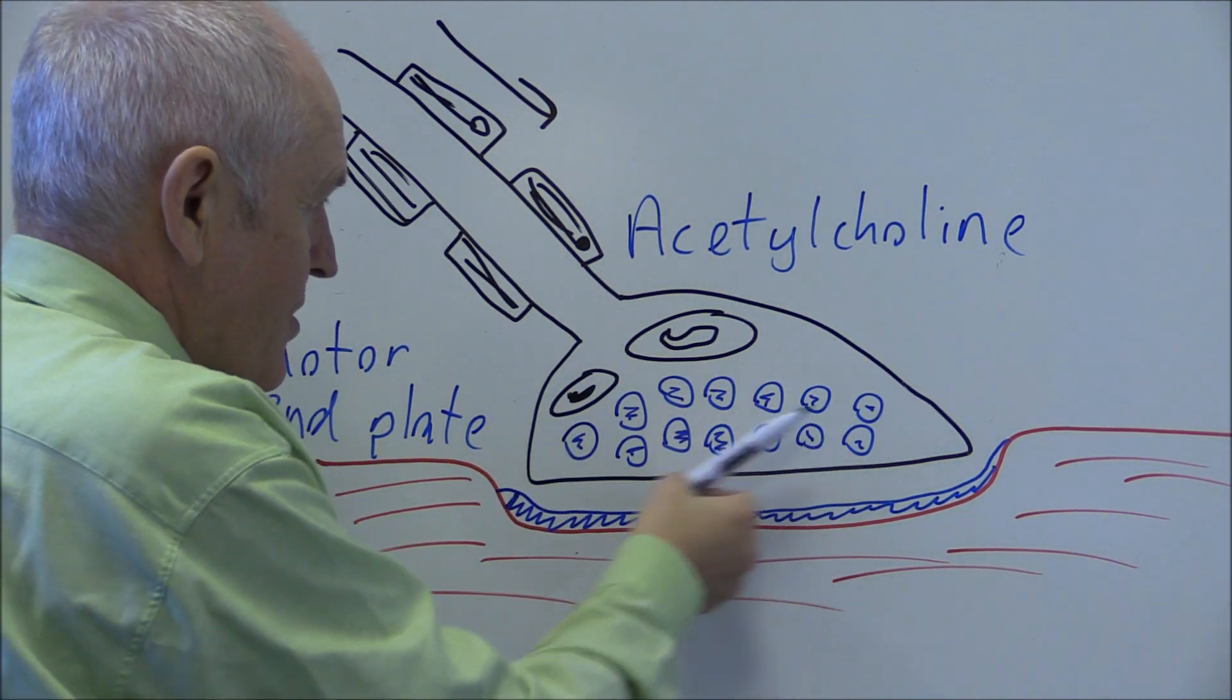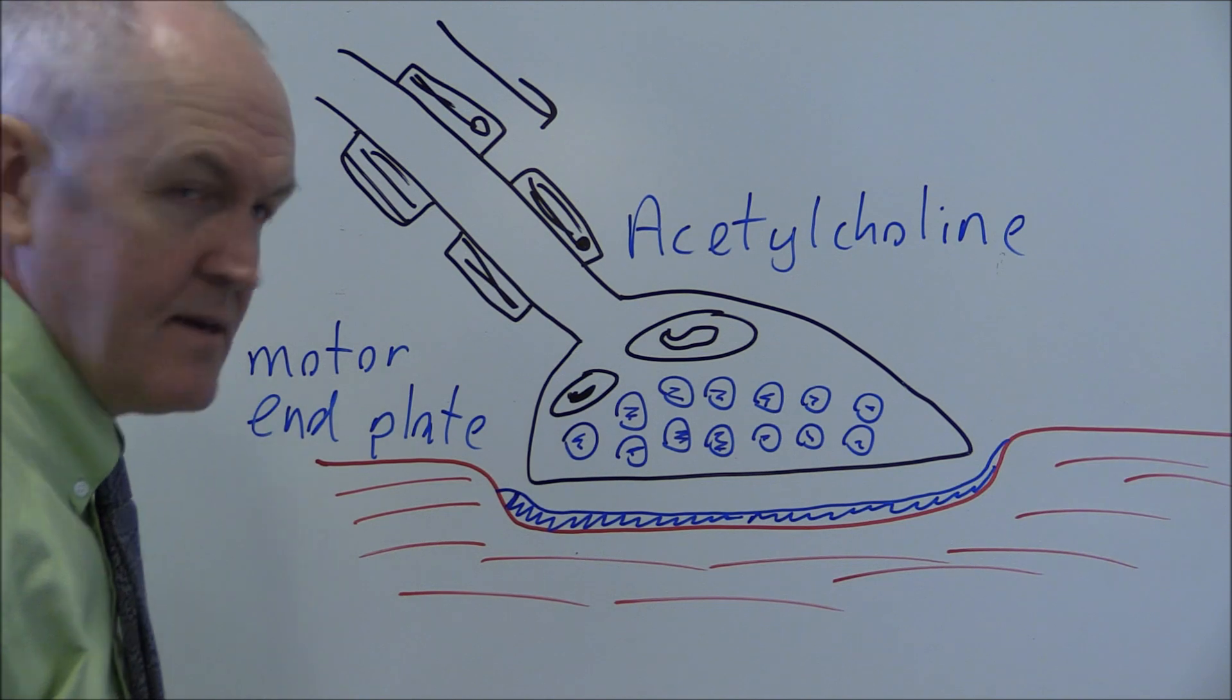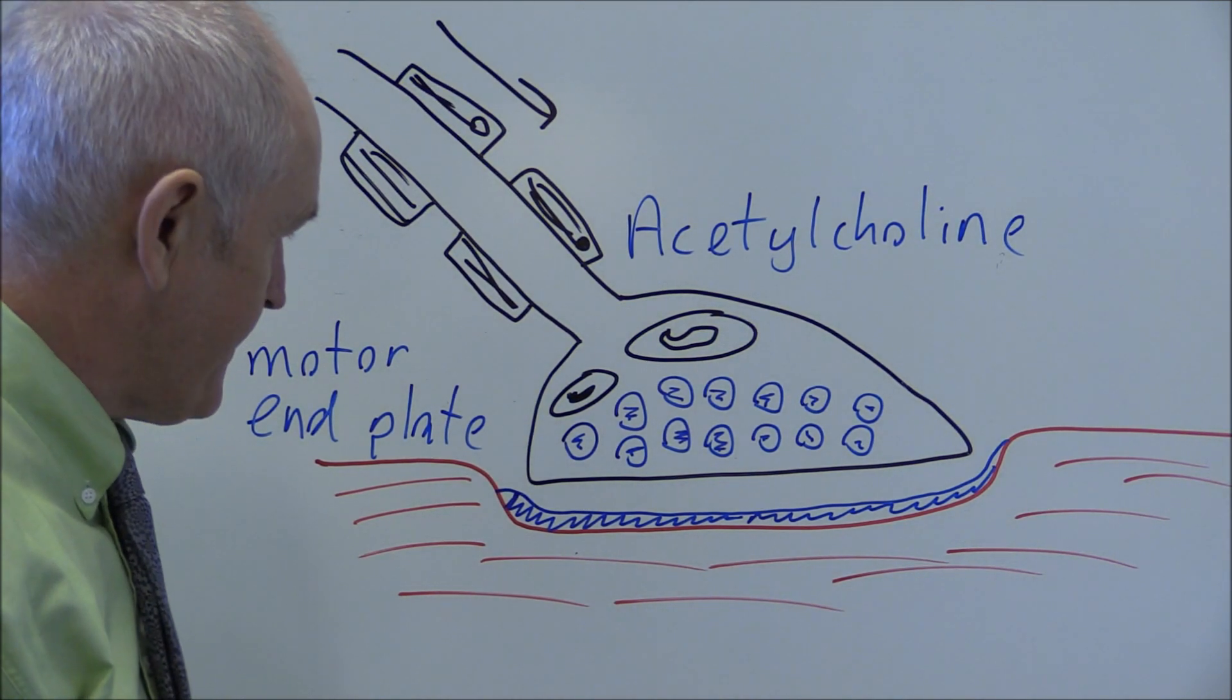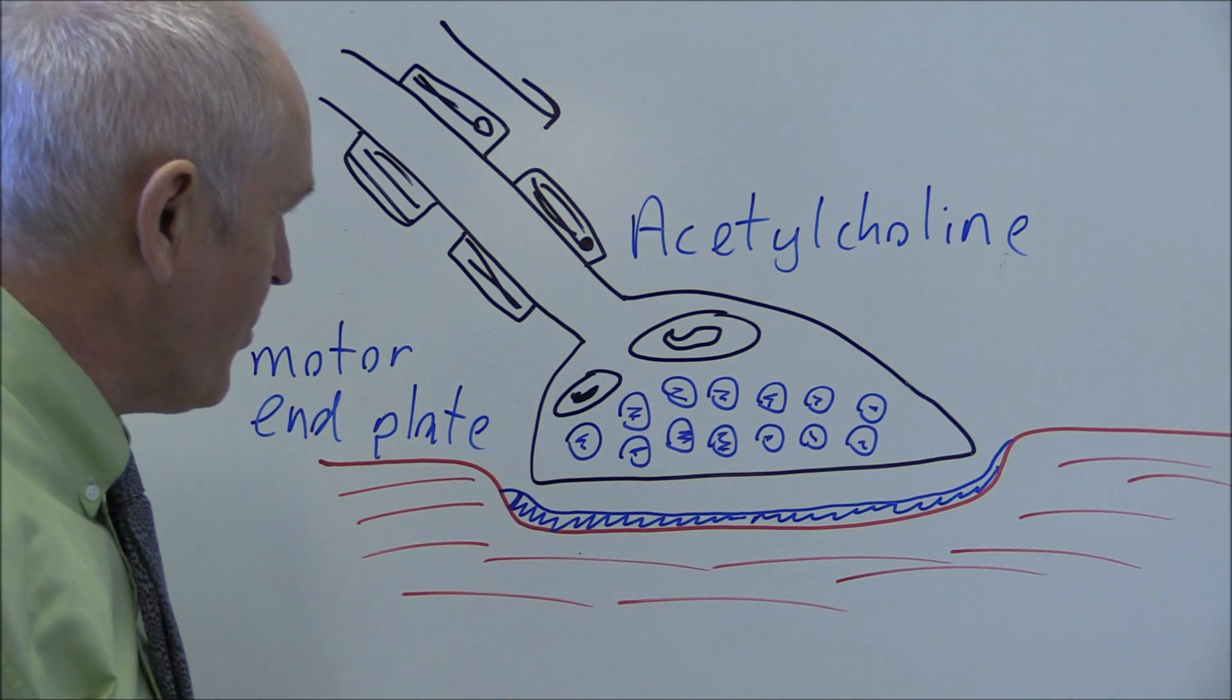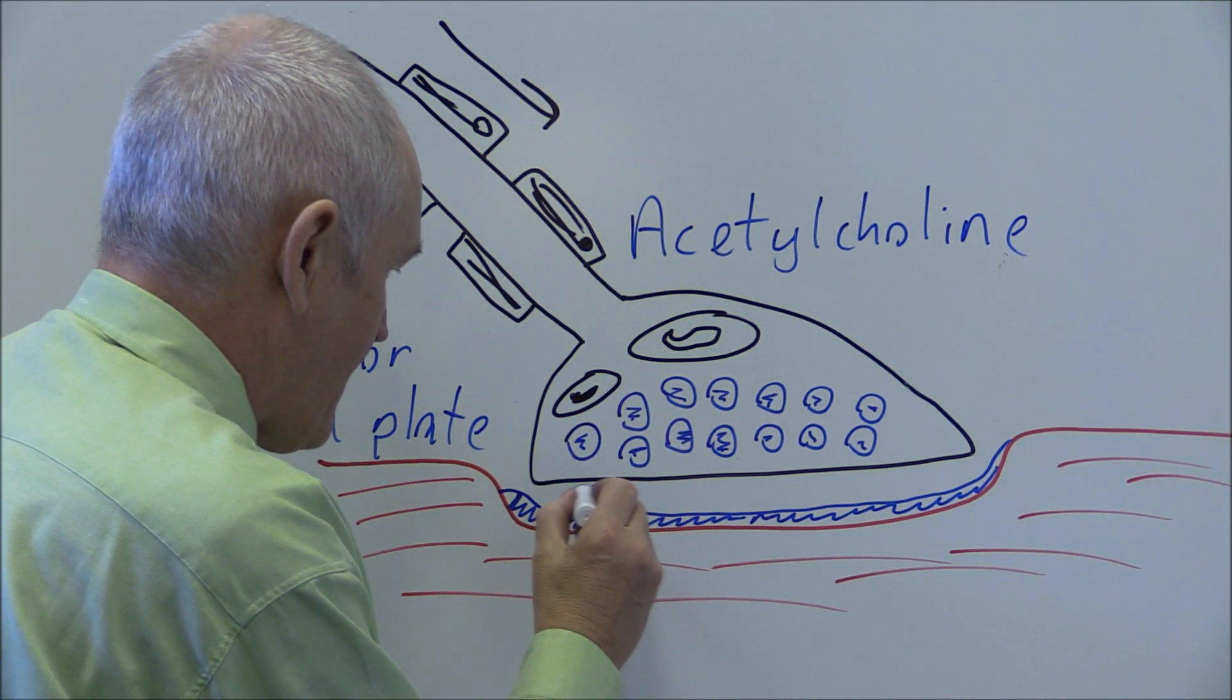The electrical nerve impulse is going to arrive in the motor end plate. That's going to cause the release of the acetylcholine into the synaptic gap.